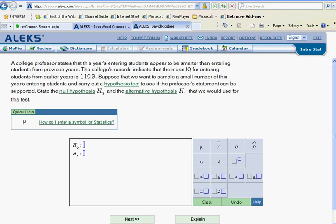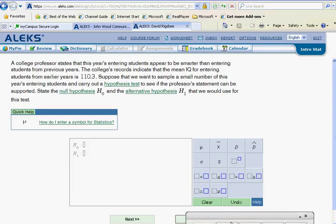And let's see what we have. Now, a college professor states that this year's entering students appear to be smarter than entering students from previous years. The college's records indicate that the mean IQ for entering students from earlier years was 110.3. Now, suppose that we want to sample a small number of this year's entering students and to carry out a hypothesis test to see if this professor's statement can be supported. So we're going to state the null hypothesis and the alternate hypothesis that we would use for this.